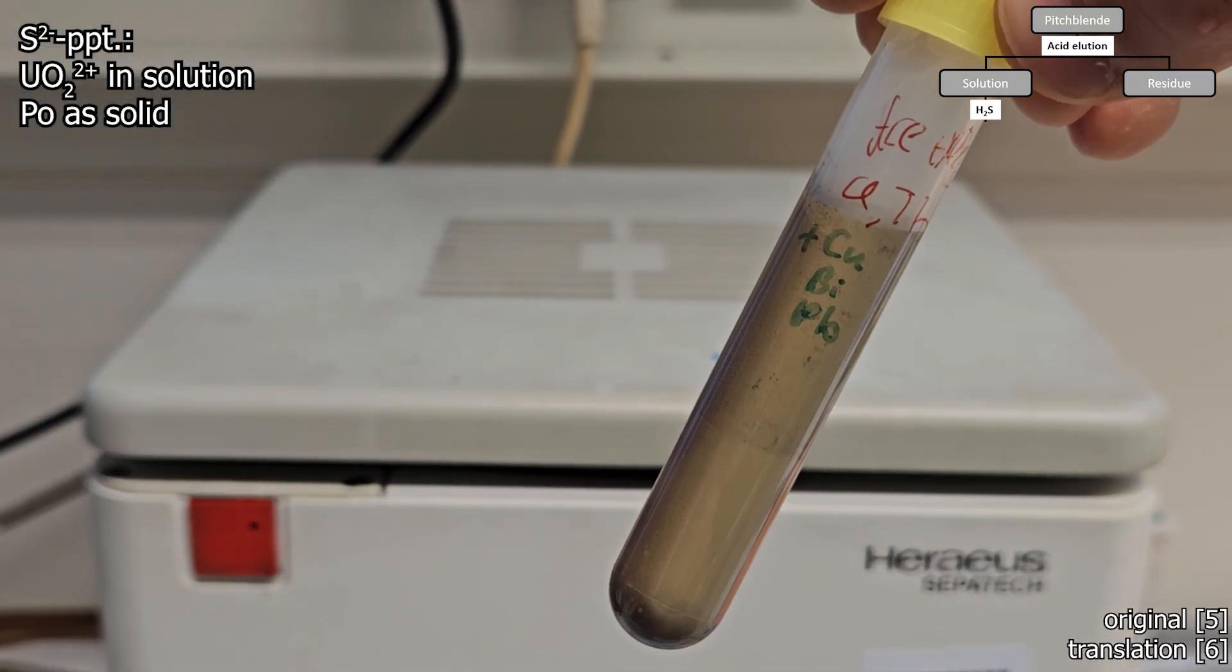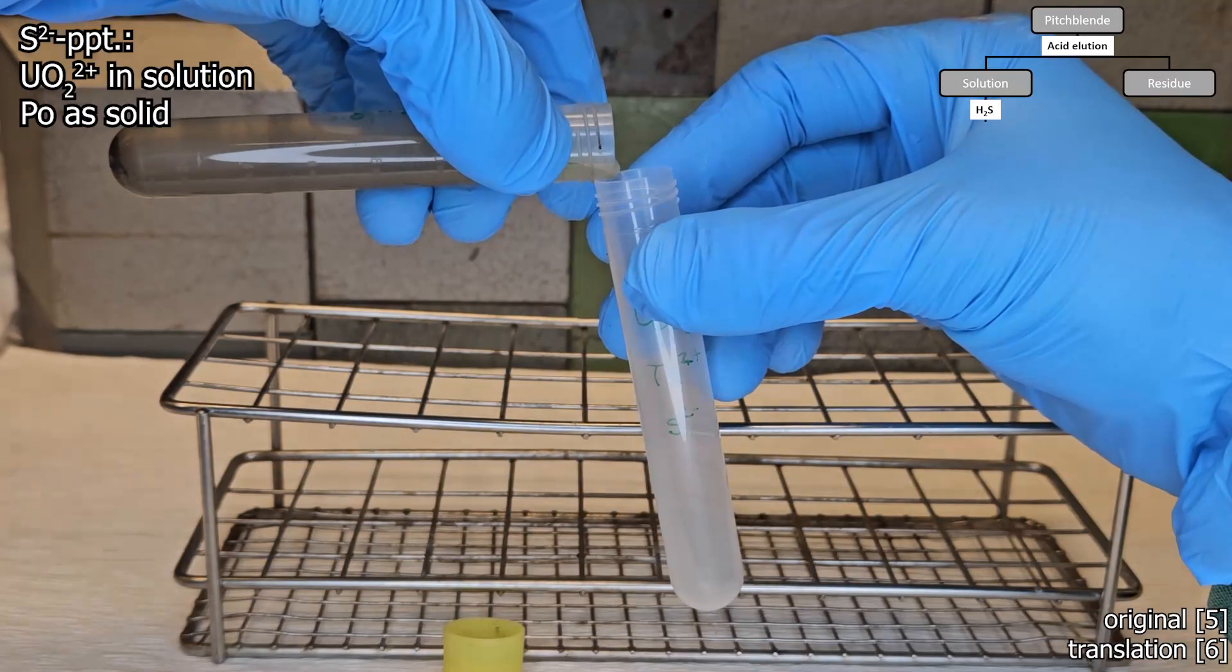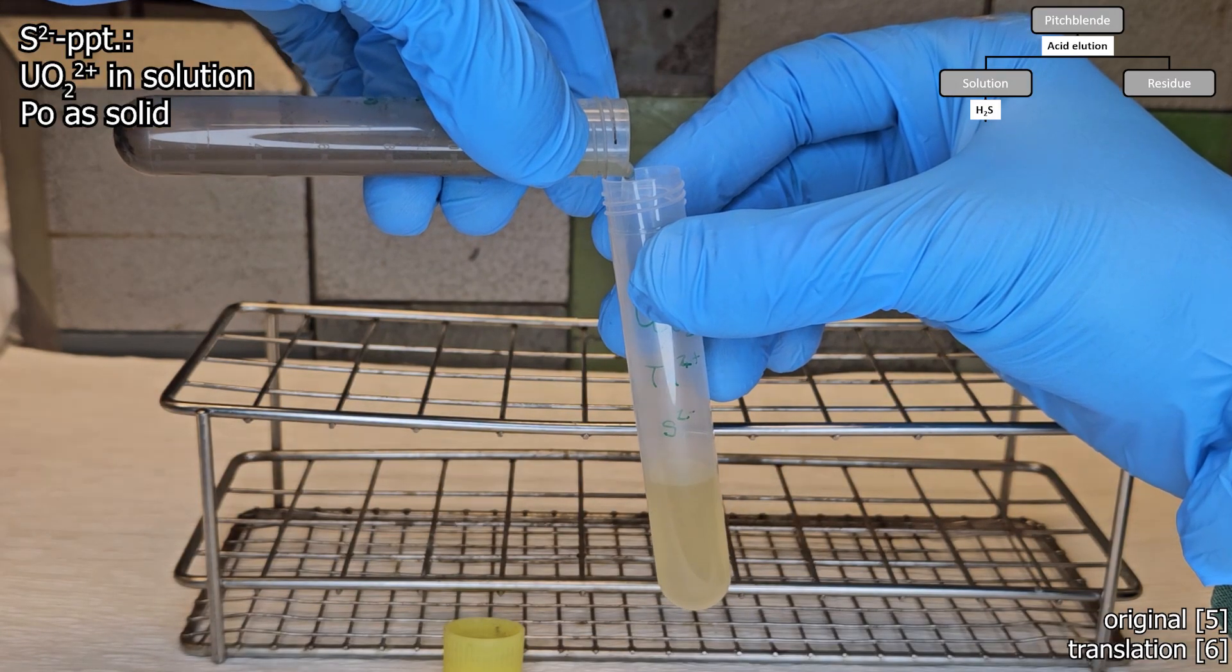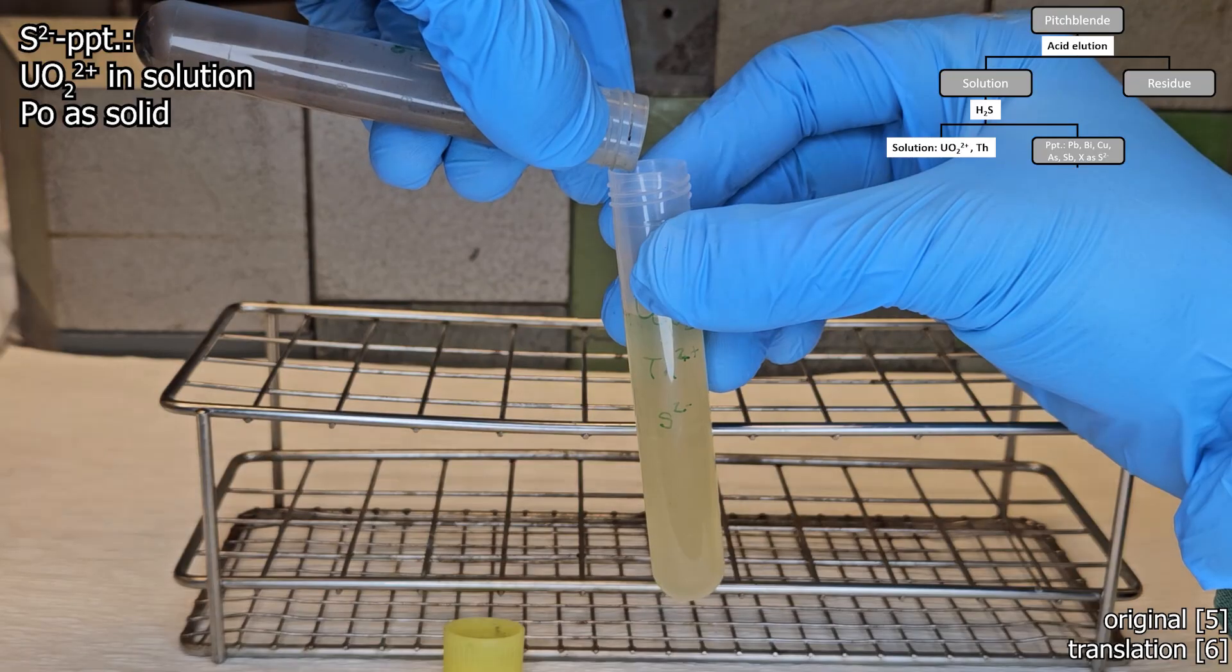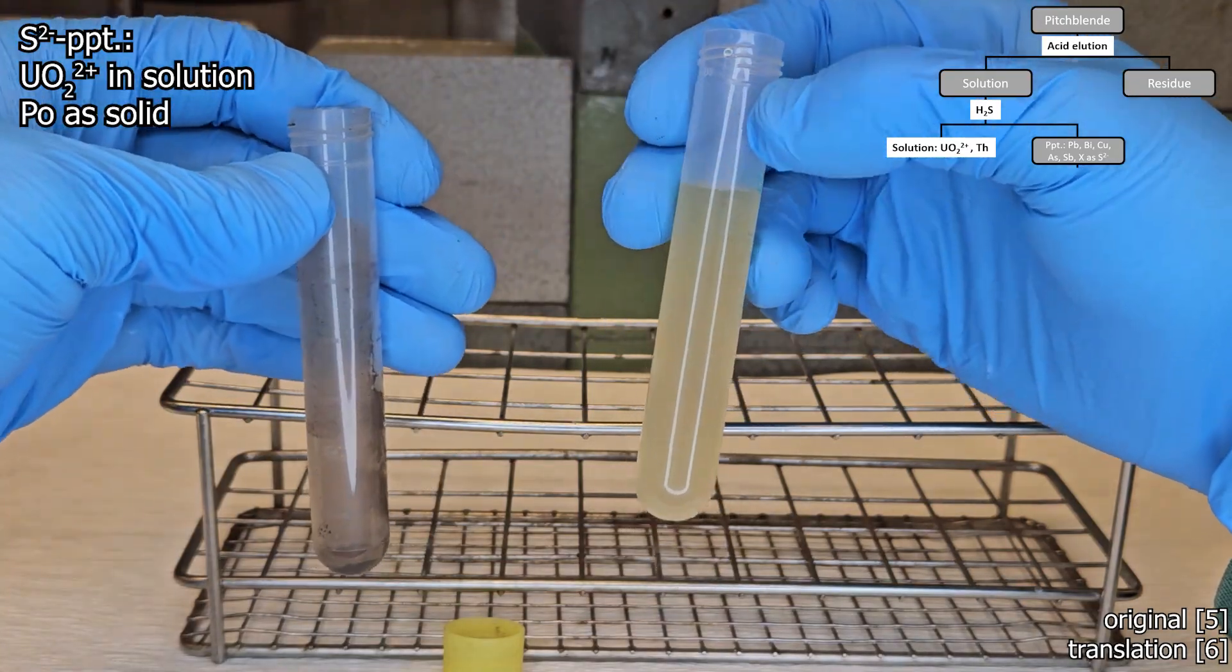That was really annoying as the sulfide is really fine and sticks to pretty much everything. You can track the procedure because at the end you want to have a clear yellow solution. The yellow color comes from uranium and there's also some thorium present, which remain in the solution.